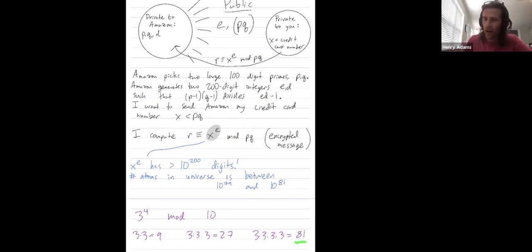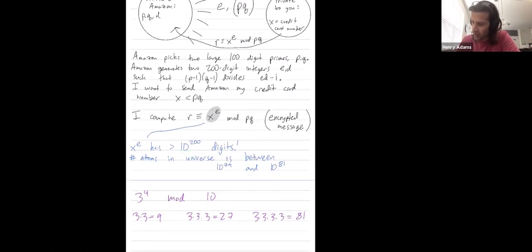And I don't want to do this method if I'm going to get a number that has 10 to the 200 digits. So another way to do this is 3 times 3 is 9. And then 3 times 3 times 3 is 9 times 3, which is 27. But mod 10, that's just 7. And then 3 times 3 times 3 times 3, that's just 7 times 3. And 7 times 3 is 21, which mod 10 is 1. So you still get the right answer reducing by this modulus as you go. And that's using a little bit of basic group theory to make this more computationally efficient.